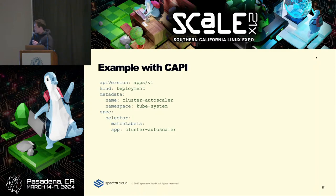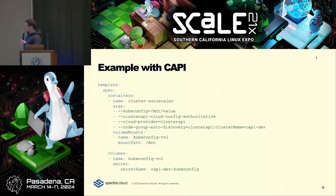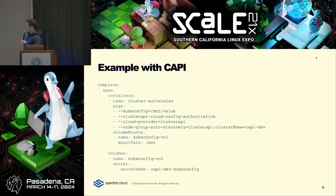Looking at some YAML: we have a Cluster Autoscaler deployment in kube-system with a kubeconfig for a theoretical target cluster 'cappy-dev' mounted as a secret, so it can talk to that target cluster. There's also this concept of node group auto discovery — we're telling Cluster API to consider all machines within the cappy-dev target cluster as one node group, though that can be more nuanced with labels or namespaces.